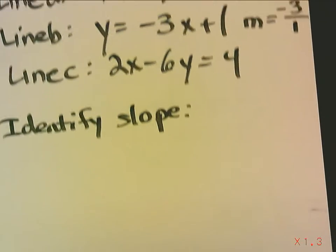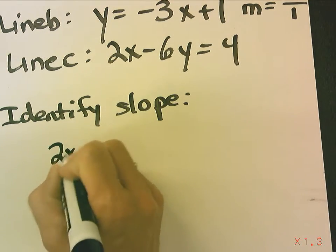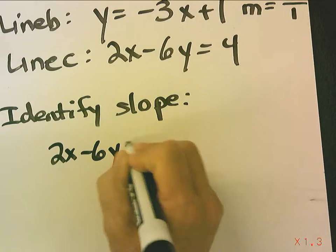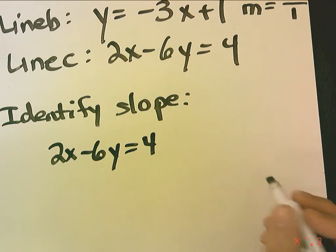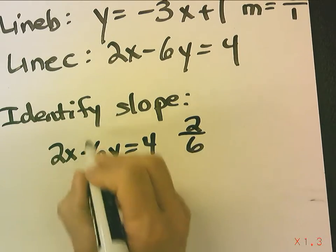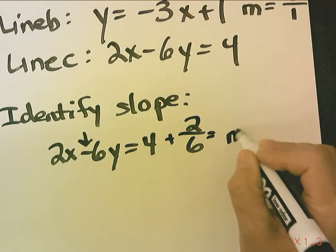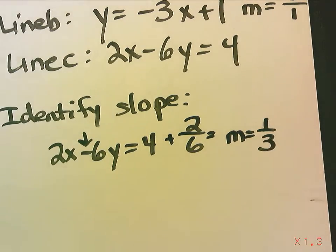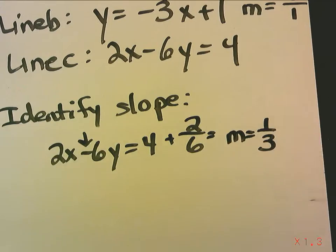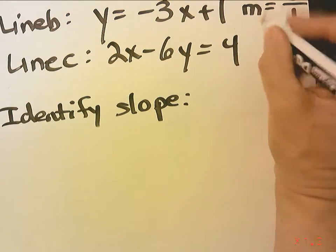Now, we're going to identify the slope for line C. Now this is in standard form, and some of you may remember from standard form, we can get the slope by putting A over B, and if B is negative, the slope is positive. So this slope is positive 1 third. Okay, so I'm going to add that here.